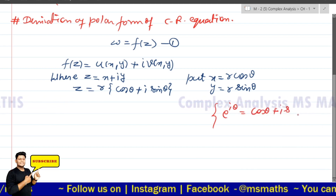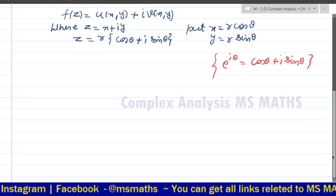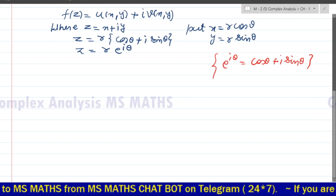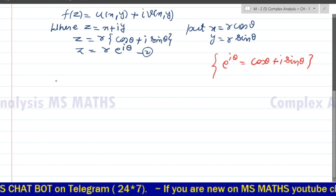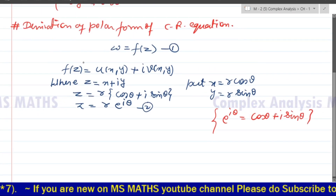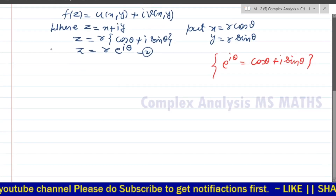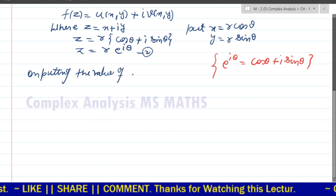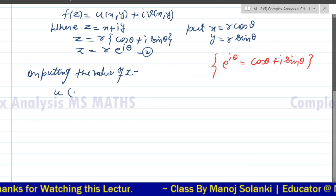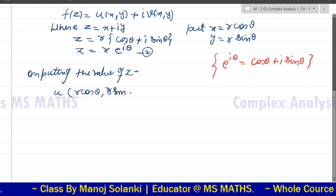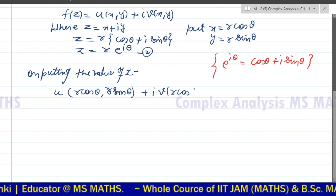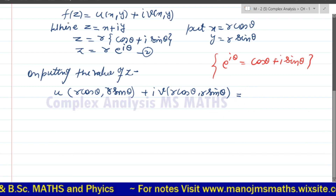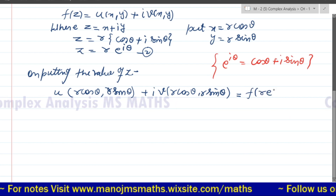Now there is a formula called the Euler formula: e to the power iota theta is equal to cos theta plus iota sin theta. So z equals r e to the power iota theta. On putting the value of z, we replace x with r cos theta and y with r sin theta, and we get u(r cos theta, r sin theta) plus iota v(r cos theta, r sin theta), which equals f(r e to the power iota theta).